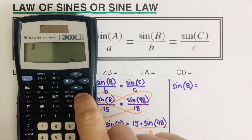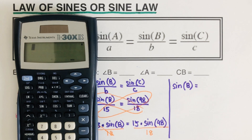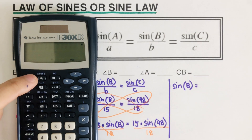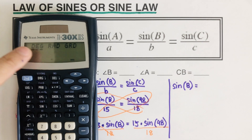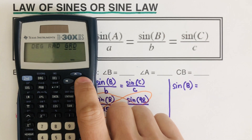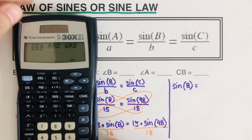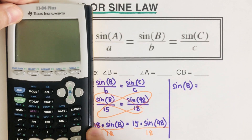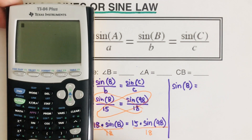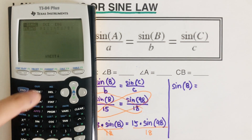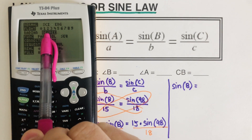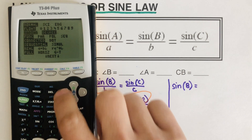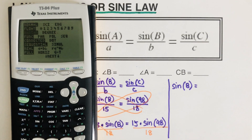When solving the law of sines or cosine law, be sure your calculator is set to degree mode. On the blue calculator, press the button to confirm it's in degree. On the TI-84, hit mode and make sure it is set to degree, not radian, then press enter.